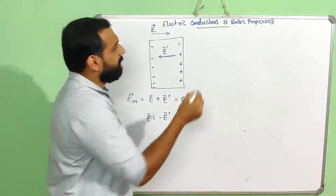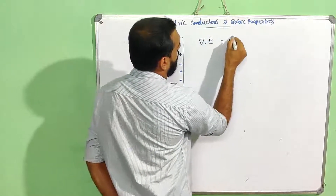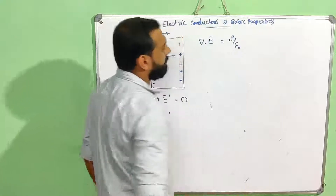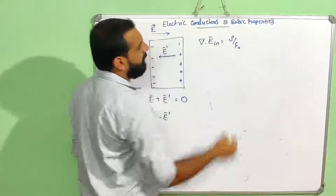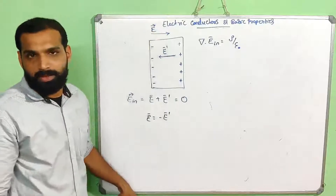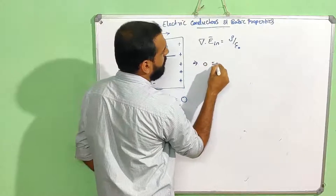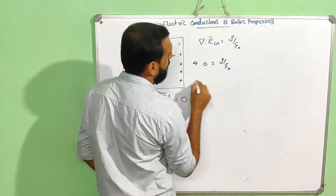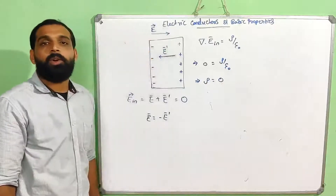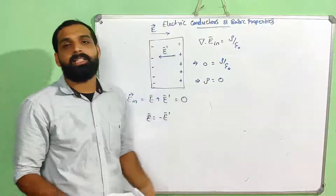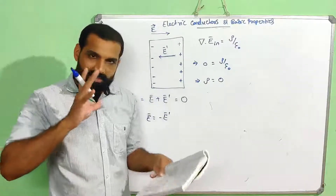Now, from the differential form of Gauss's law: del dot E equals rho by epsilon-zero. Inside the conductor, E_in equals zero, so del dot E_in equals zero, which means rho by epsilon-zero equals zero, and therefore rho equals zero. The charge density inside the conductor is zero.